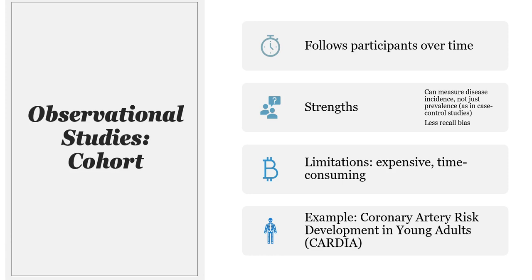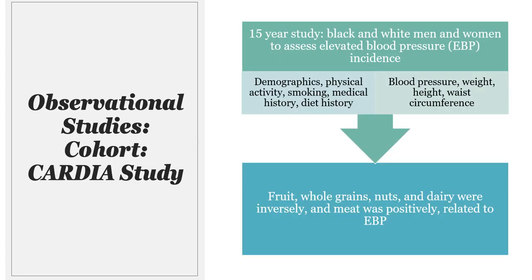Cohort studies let us measure disease incidence, not just prevalence. However, they are hard to do — they're expensive over time, and they also have attrition, meaning people leave the study. That can be problematic if you're following a group of people for 10 or 20 years, because some people are going to bow out of the study.